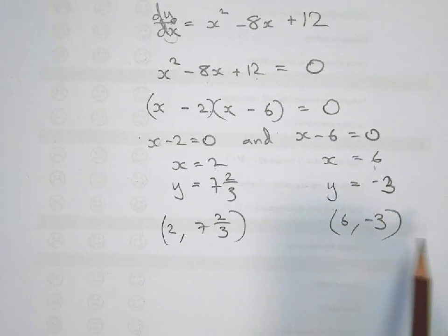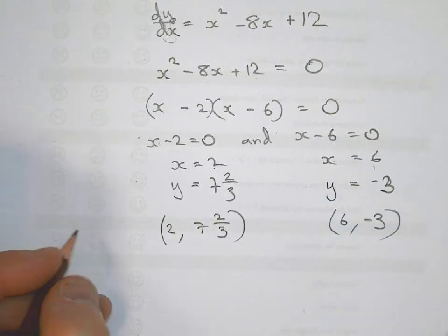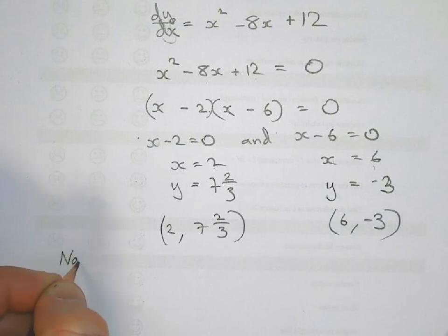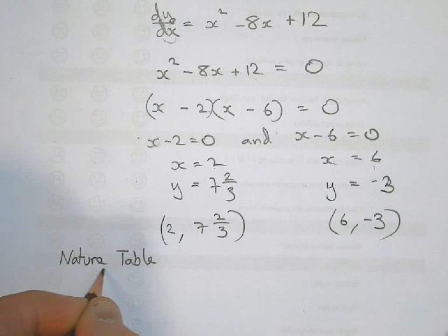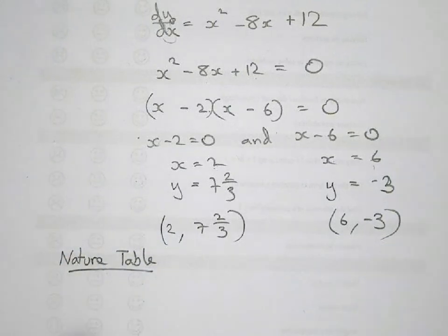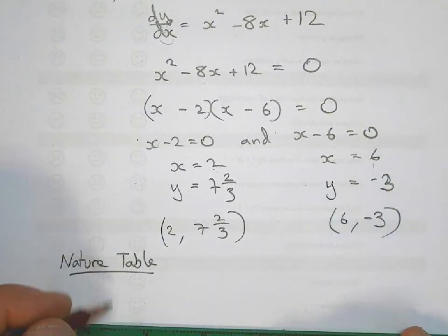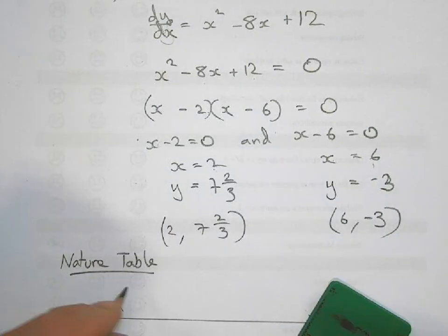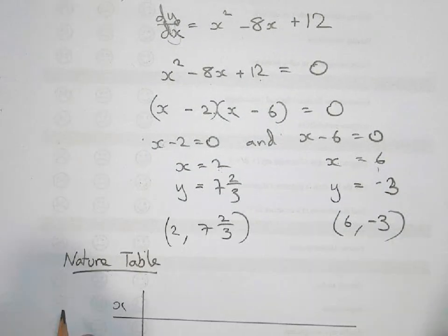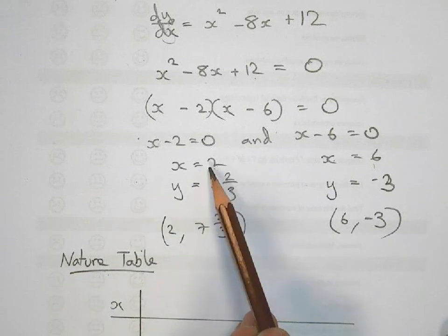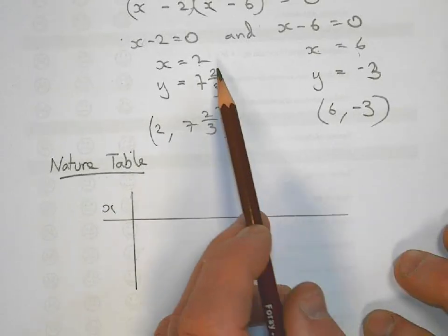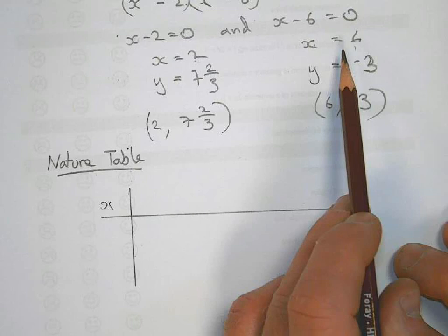Next thing, we've got to work out their nature. So the table of signs, or the nature table. You draw yourself a table. You're going to use the two values for x. The first value for x is 2, the next value for x is 6. You're going to write 2 and 6.